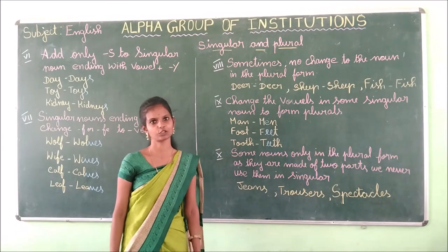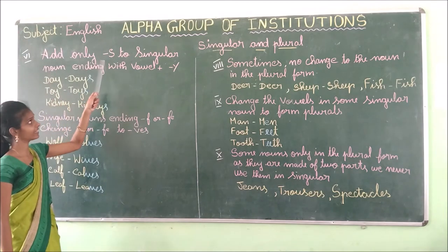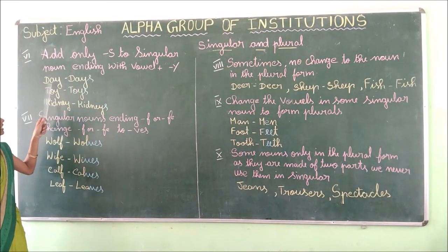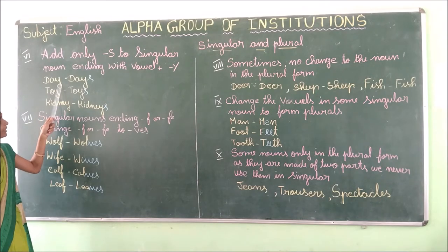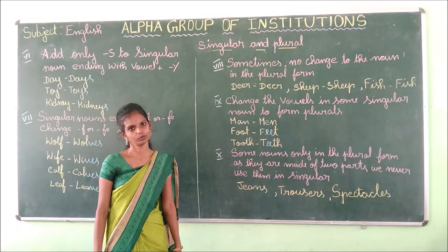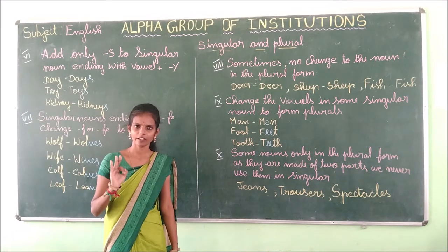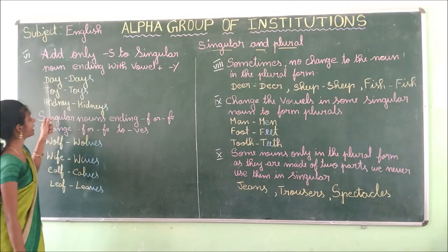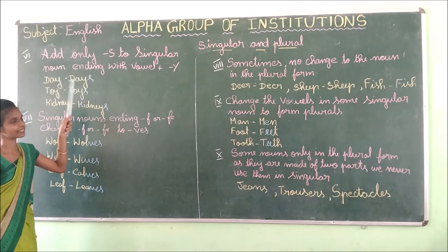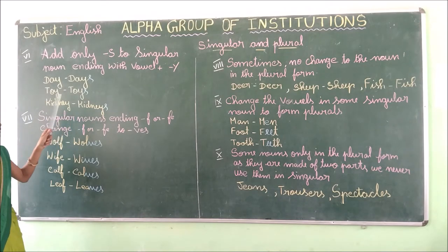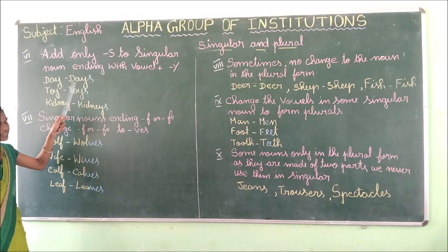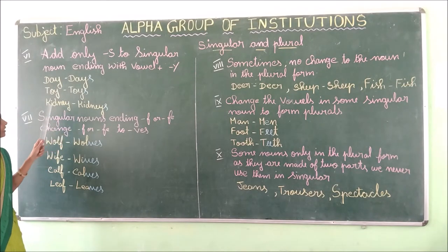Sixth rule: add only S to singular nouns ending in vowel plus Y. The vowels are A, E, I, O, U. If the singular noun ends with a vowel plus Y, just add S. Example: day→days, toy→toys, kidney→kidneys.